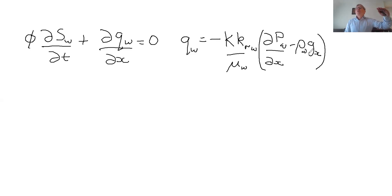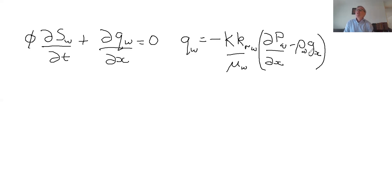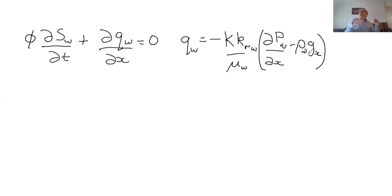So if we have horizontal flow in one dimension, there's going to be no effect of gravity. For vertical flow, it will just be rho*g. And if it's at some angle in between, it's going to be g*sin(theta) where that's the angle.